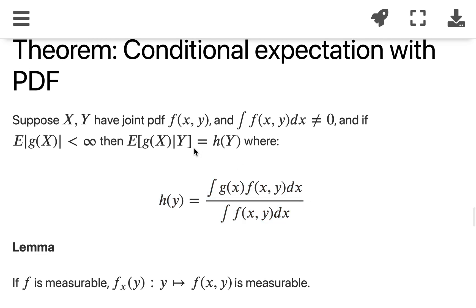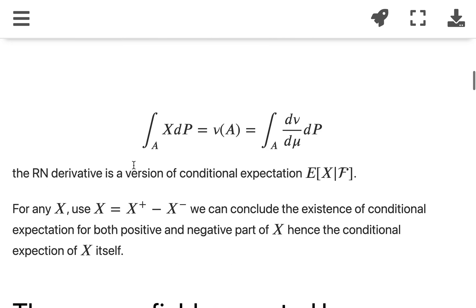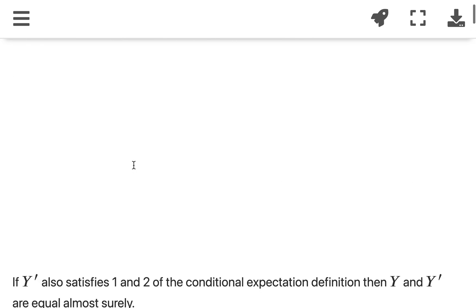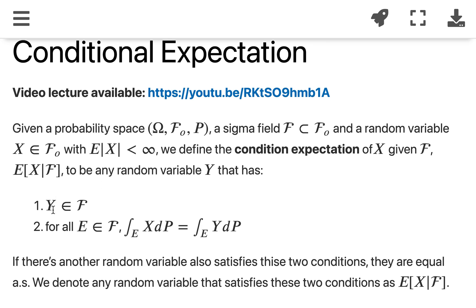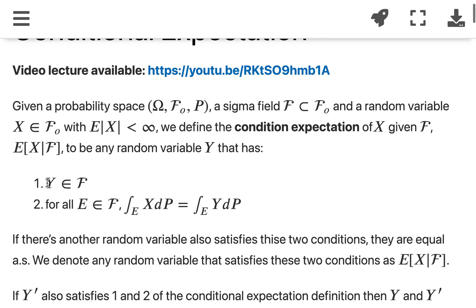Remember, we are proving that this is a candidate for what we define as conditional expectation — a version of the candidate. It must satisfy two conditions: first, that candidate must be sigma-field measurable; second, it must satisfy this integral equation.